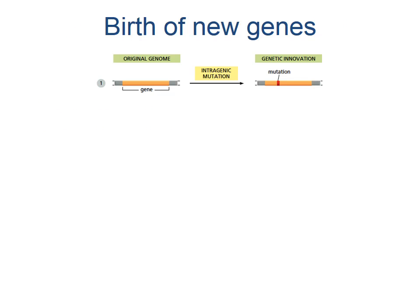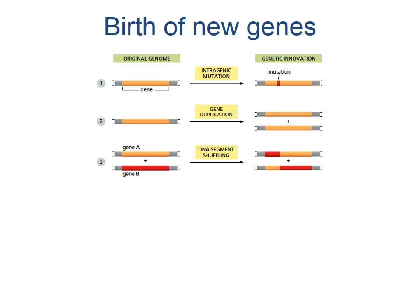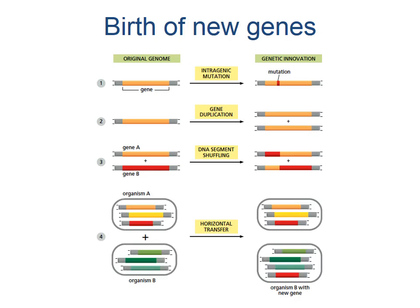The birth of new genes can occur via intragenic mutation, or the change in the DNA sequence of a pre-existing gene. It can also occur through gene duplication, whereby one or the other copy of the gene can then evolve a new function. You can also evolve new genes through DNA segment shuffling, or the mixing and matching of parts of genes. Finally, you can also acquire a totally new gene from a different source like a bacteria or a virus through horizontal gene transfer.